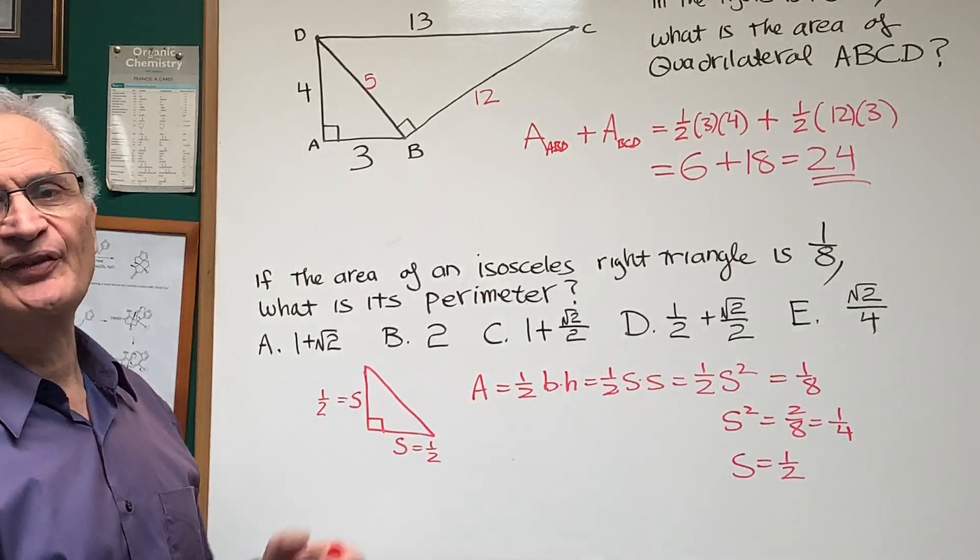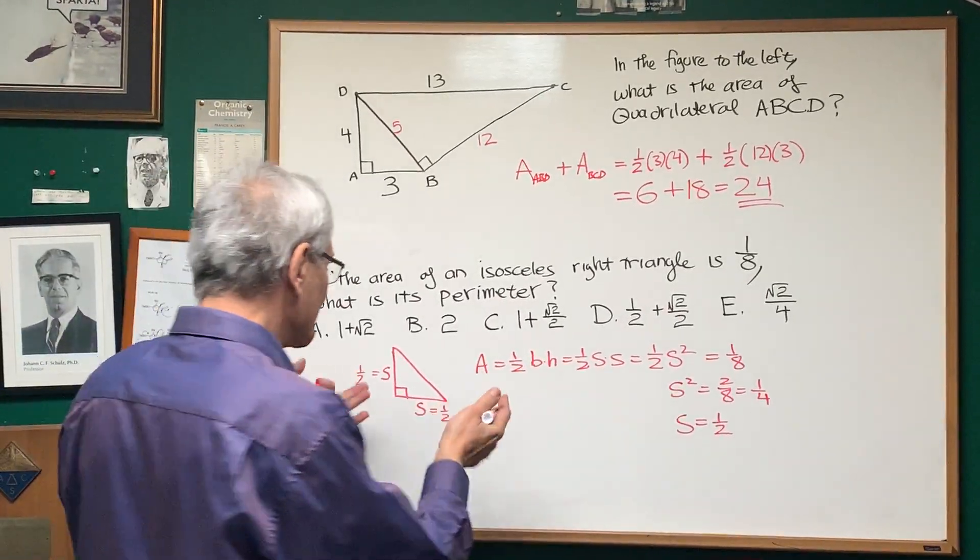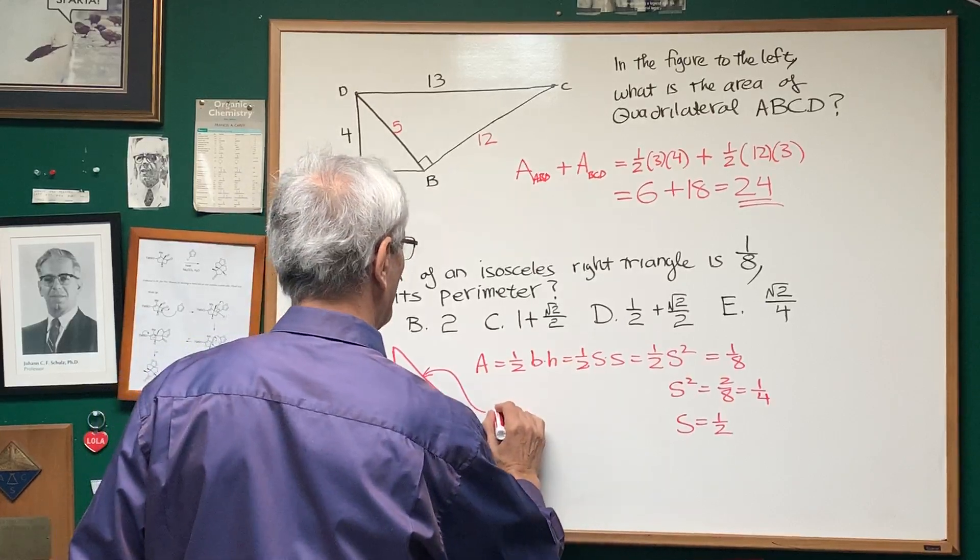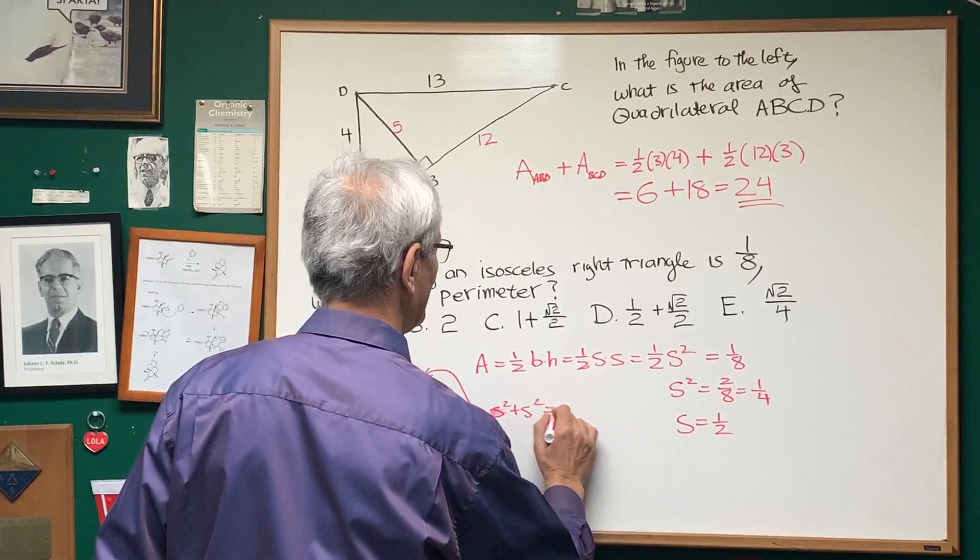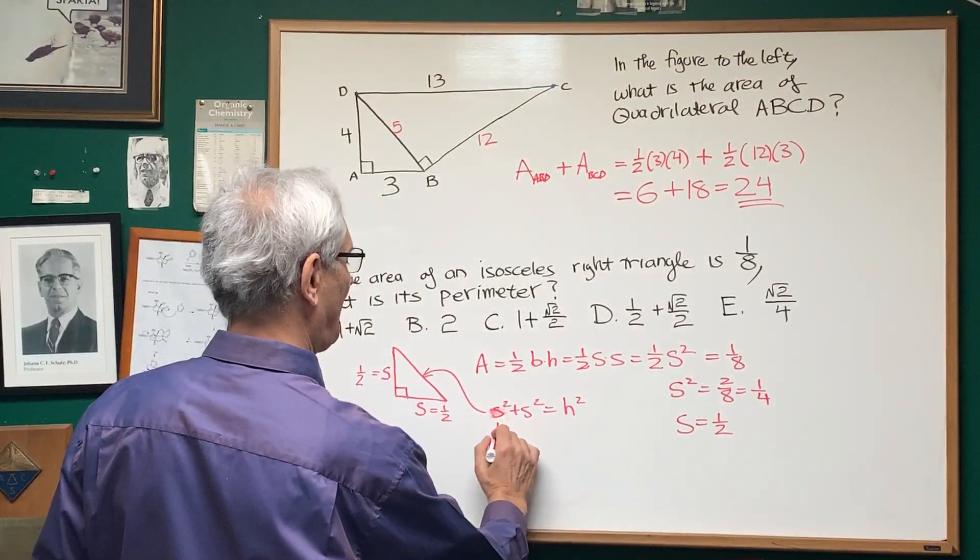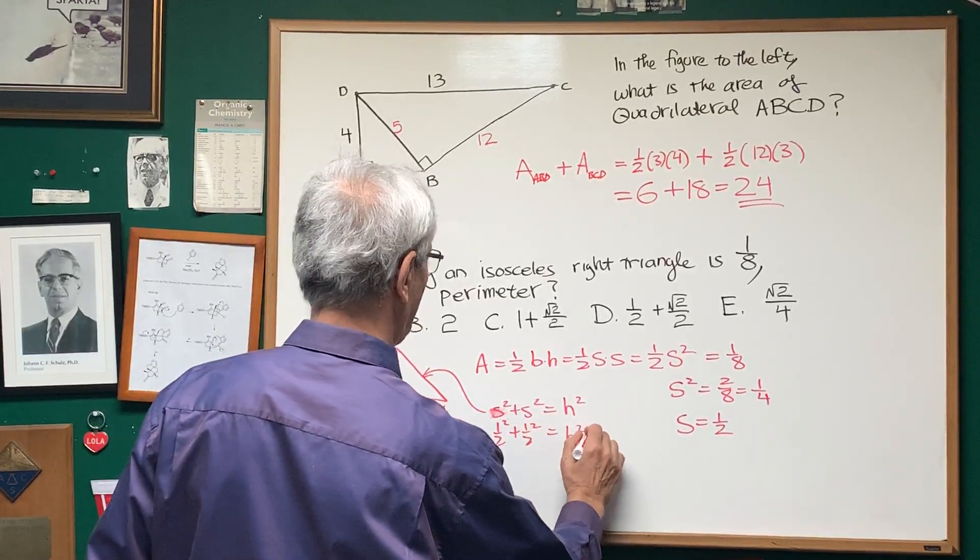Now, all we have to do is find the length of the hypotenuse of this isosceles right triangle. And we're going to do that by the Pythagorean theorem. We're going to have that s squared, s squared plus s squared equals the hypotenuse squared. And we have one-half squared plus one-half squared equals the hypotenuse squared.